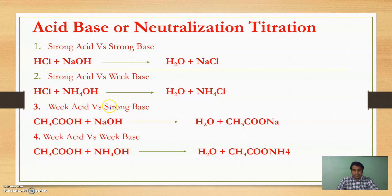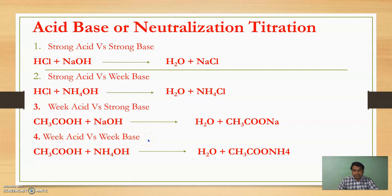For Weak Acid vs. Strong Base, acetic acid (a weak acid) is titrated against NaOH (strong base) to give water plus salt. For Weak Acid vs. Weak Base, acetic acid is titrated with ammonium hydroxide (weak base) to give water plus ammonia as a salt. This fourth type — weak acid vs. weak base — is practically impossible, because no suitable indicator is available and it does not give a correct end point.